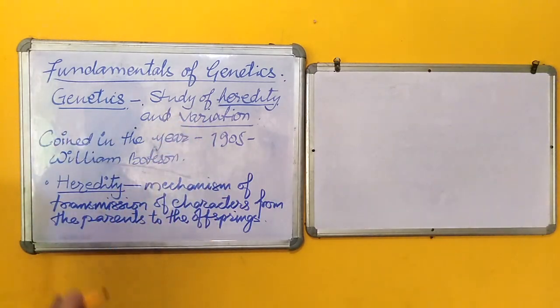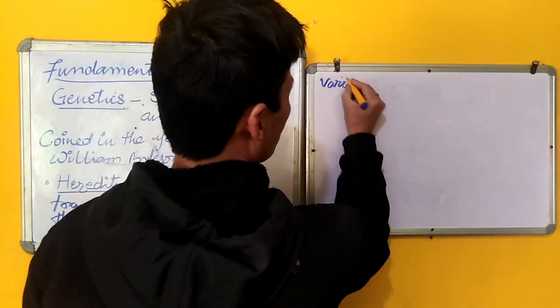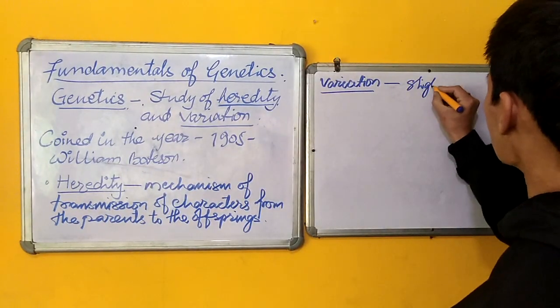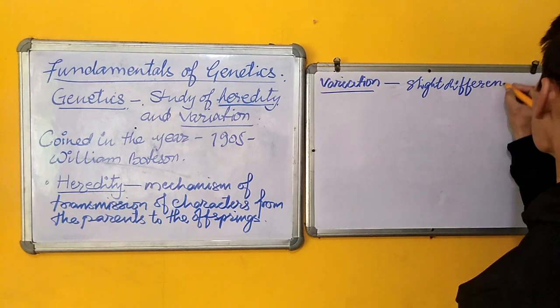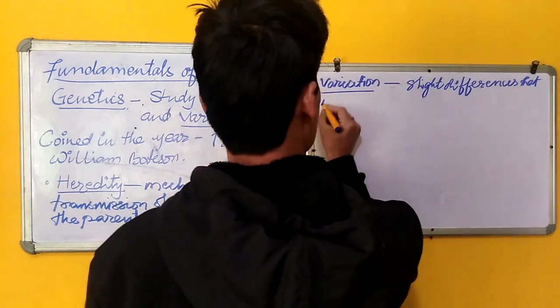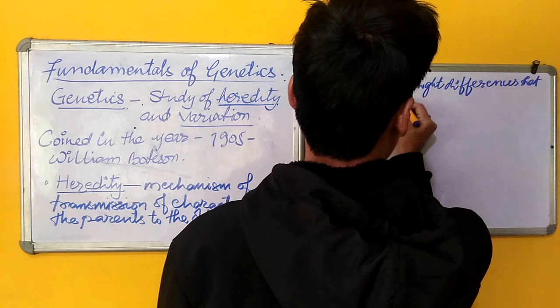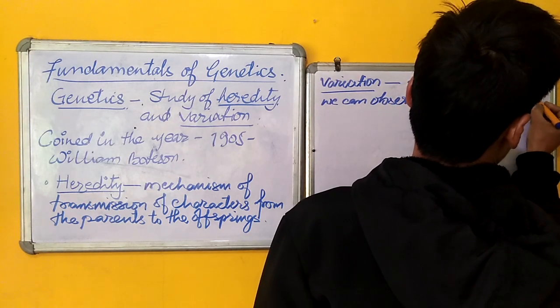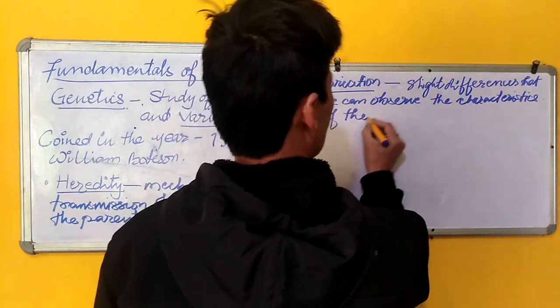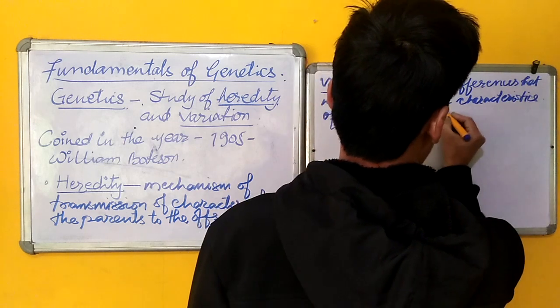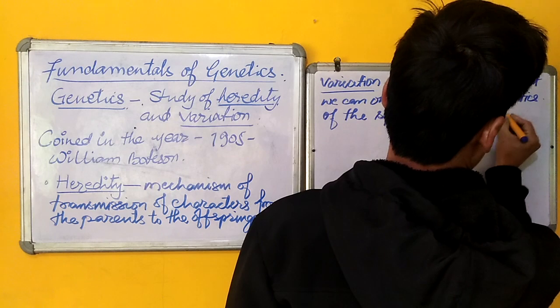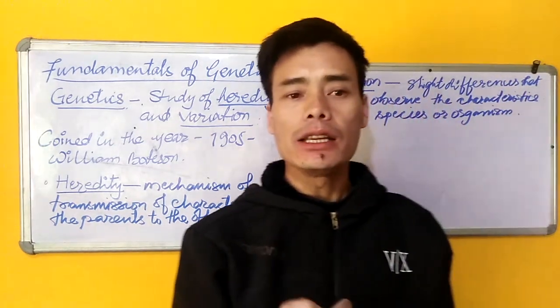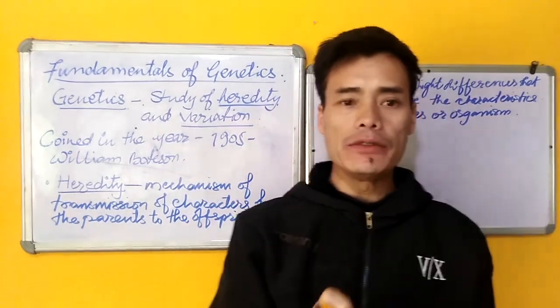The next terminology in the definition of genetics is variation. And variation is nothing but the slight differences that we can observe in the characteristics of the species or organisms. What I mean by variation here is the differences that we can see in the individuals even though the individuals belong to the same species.